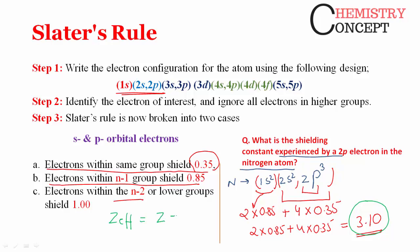The effective nuclear charge Z* = Z − σ, where σ is the shielding constant, denoted by sigma. The atomic number of nitrogen is 7, and the shielding constant is 3.10. So the effective nuclear charge experienced by the 2p electron is 7 − 3.10 = 3.90. This is how we calculate for S and P orbital electrons.